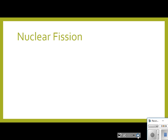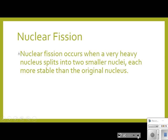We're going to talk about these notes and go over the key important parts that you should have seen on the video. The first one is about nuclear fission. Nuclear fission occurs when a very heavy nucleus splits into two smaller nuclei, each more stable than the original.